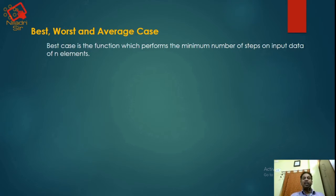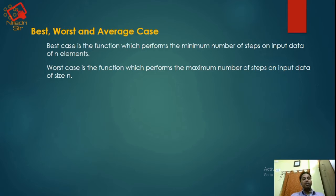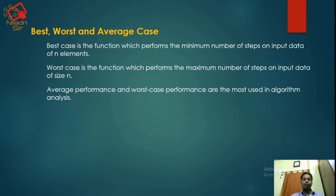Best case is the function which performs the minimum number of steps on input data of n elements. Worst case is the function which performs the maximum number of steps on input data of size n. The average performance and the worst performance are the most used in algorithm analysis.